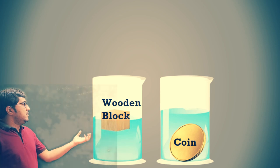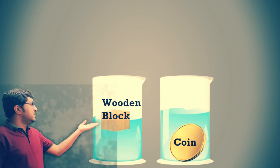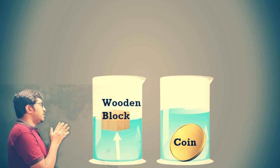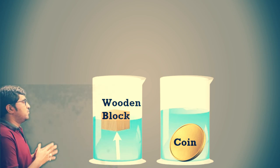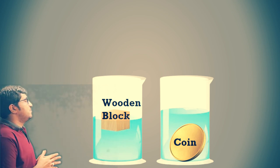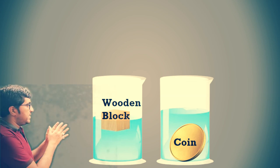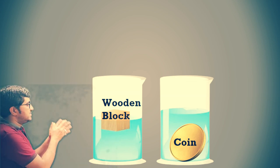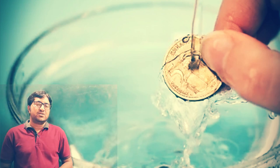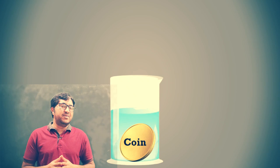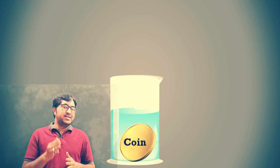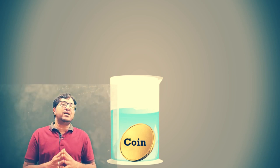Whenever wood is put on the surface of water, the water exerts an upward force, and this upward force is more than the weight of the object, so it can float. In another example, when we put a coin on the surface of water, it sinks because its density is more, and so the upward force is less compared to the weight of the object.